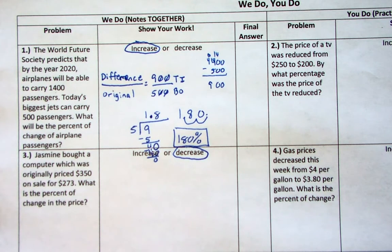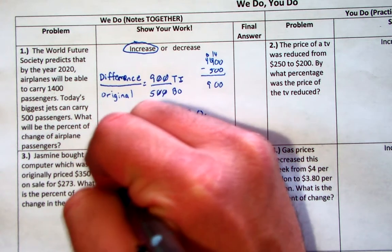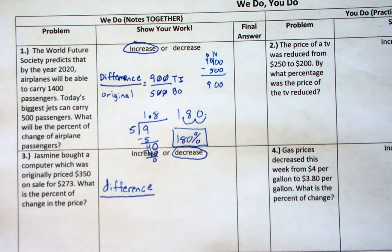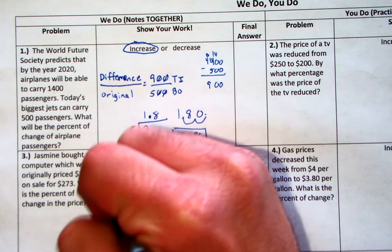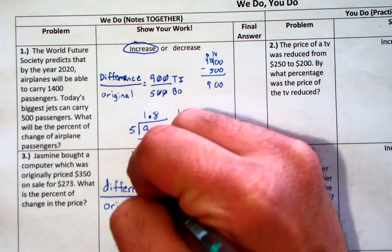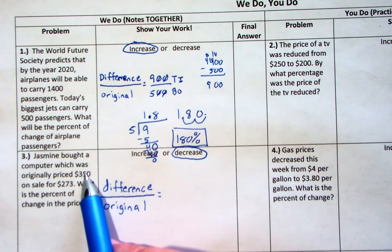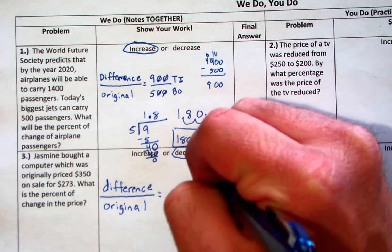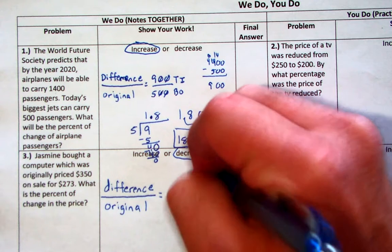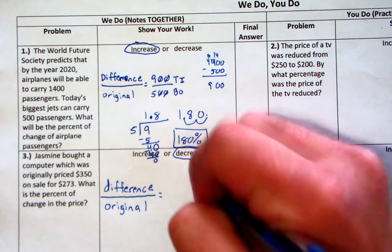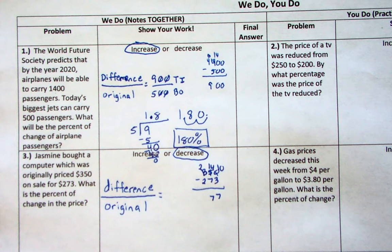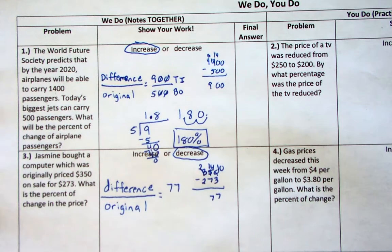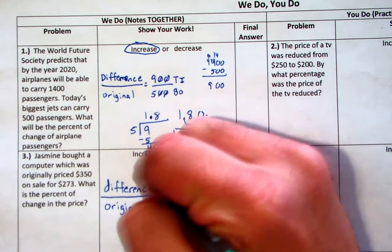All right, here are the steps. You have to find the difference from the original to the new — that's step one. Step two is you're going to put that over the original information. So let's find the difference: 350 minus 273. That's 77. So your difference from 350 to 273 is 77. What was the original price? The original price was 350. Now you have a fraction: 77 over 350.